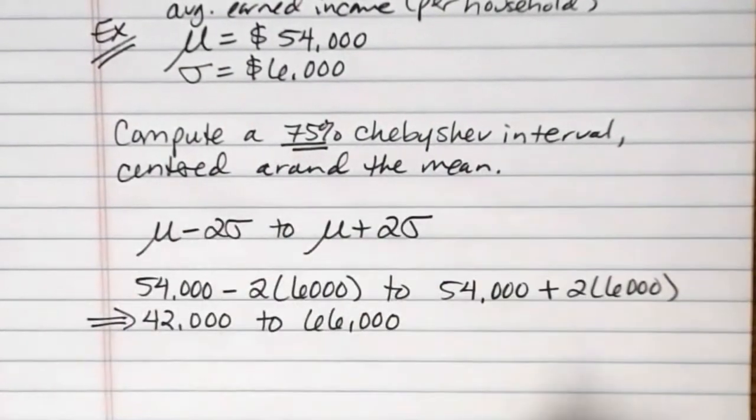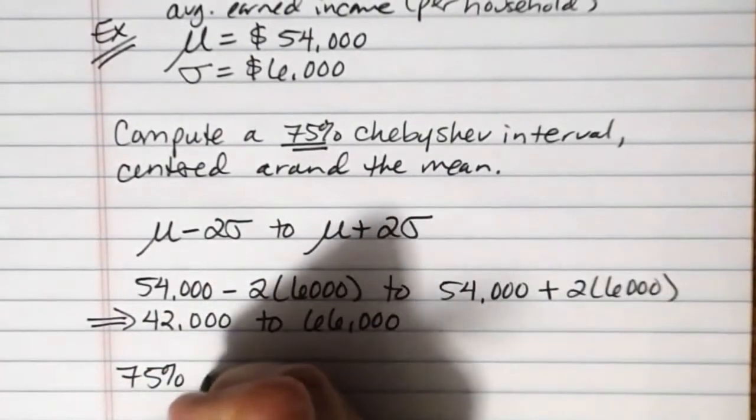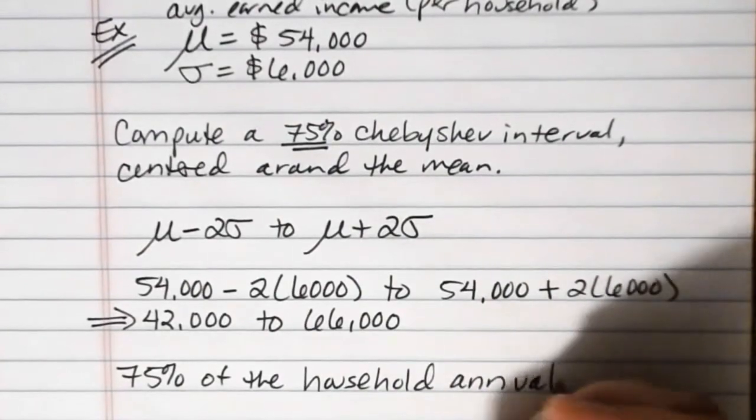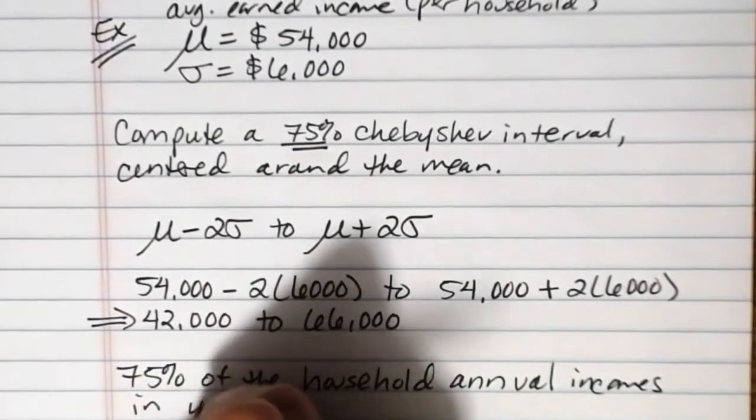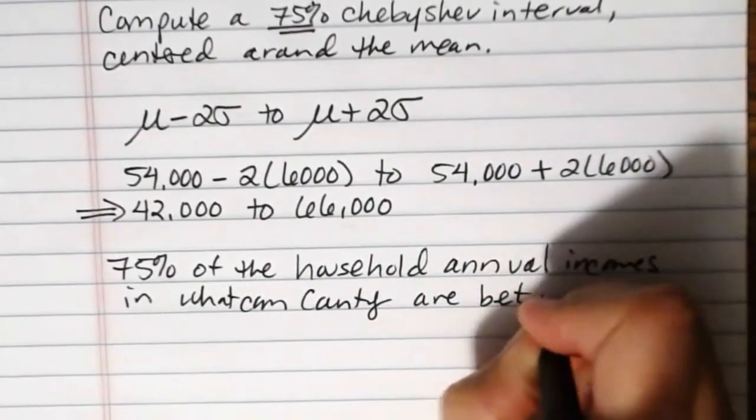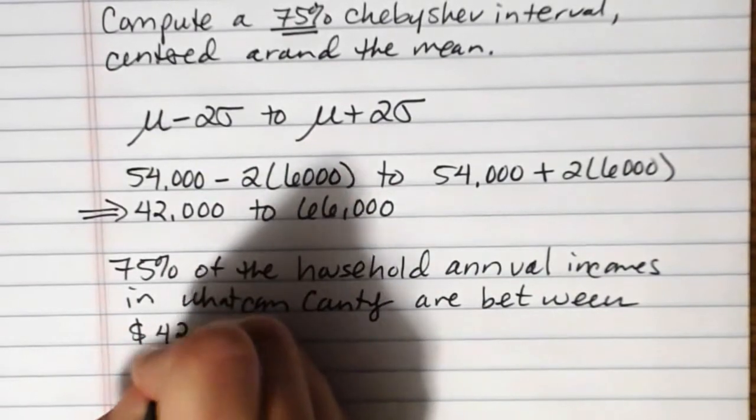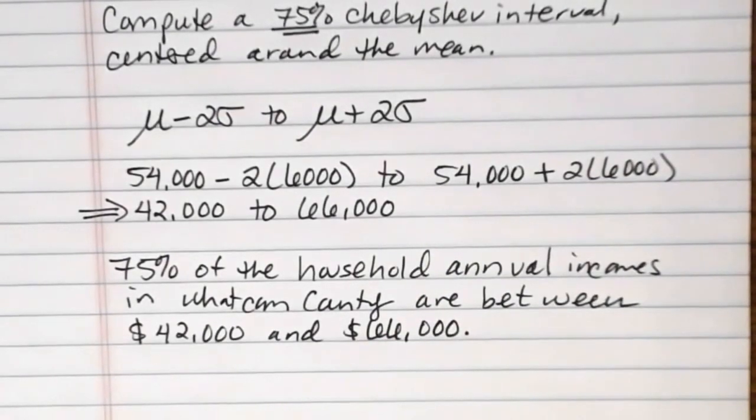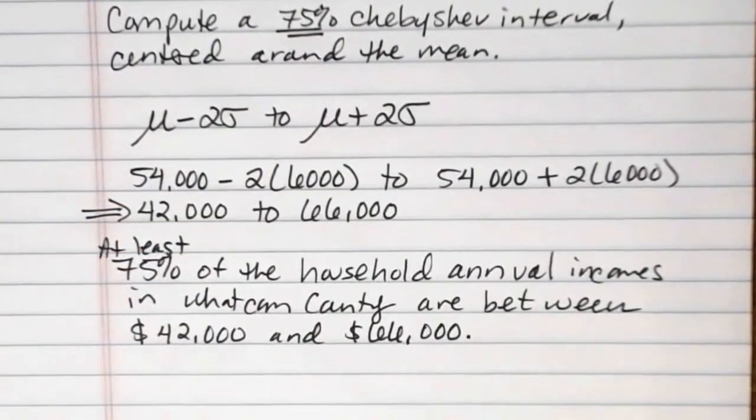Now what is this actually telling us? This is telling us that 75% of the household annual incomes in Whatcom County are between $42,000 a year and $66,000 a year. We can expect that if we were to look at all of the household annual incomes in Whatcom County, 75% of them should be between $42,000 and $66,000. It could be more than that but at least 75%, it gives us a minimum bound.